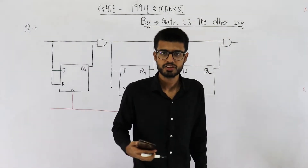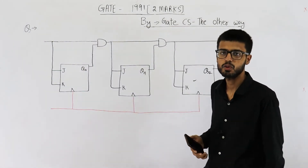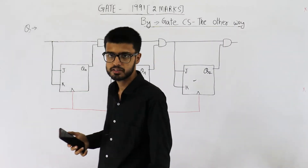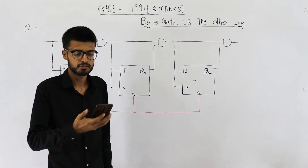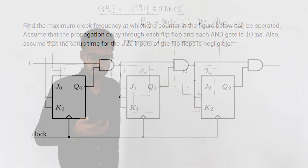Hello dear students. This question is from the GATE 1991 exam and is for two marks. Let us have a look at the statement, then I am going to solve it. Find the minimum clock frequency at which the counter in the figure below can be operated. Assume that the propagation delay through each flip-flop and each AND gate is 10 nanoseconds, and that the setup time for JK inputs of the flip-flop is negligible.